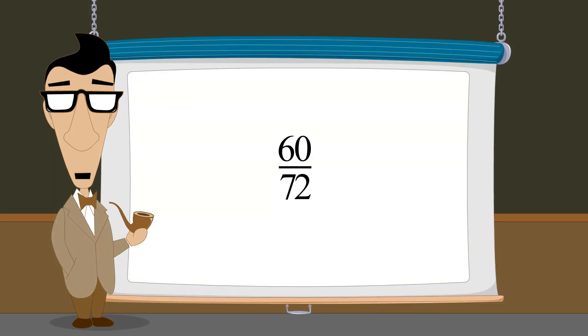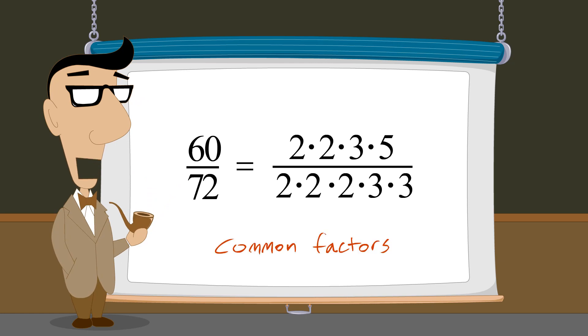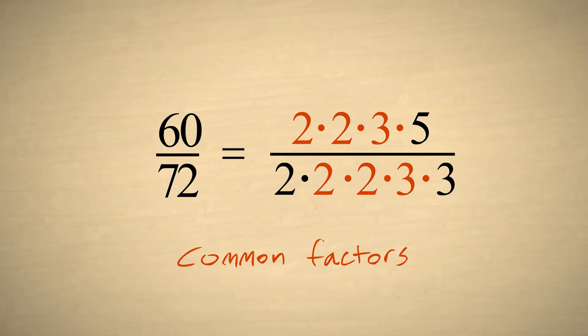We have seen that the process of reducing a fraction involves determining which factors the numerator and denominator have in common. In this example, the fraction has several common factors. These common factors include the prime numbers two and three.